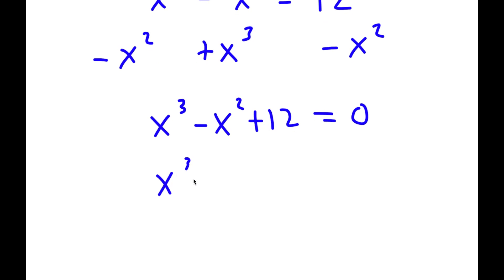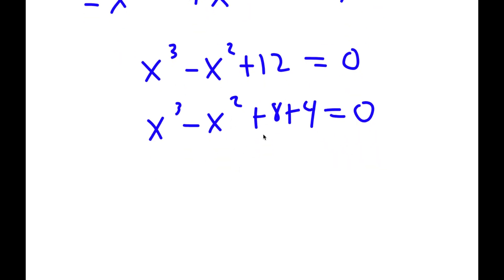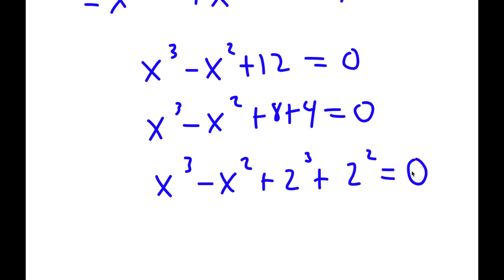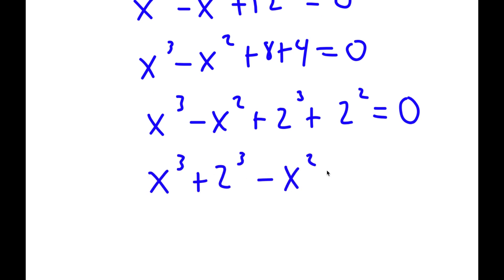I'm going to rewrite 12 here as 8 plus 4. Now 8 is the same thing as 2 to the power of 3, and 4 is the same thing as 2 to the power of 2. So if I switch the order of these, I get x to the power of 3 plus 2 to the power of 3 minus x to the power of 2 plus 2 to the power of 2 is equal to 0.